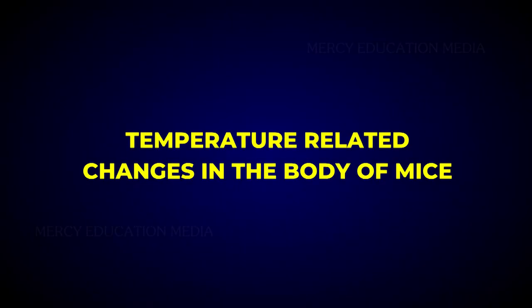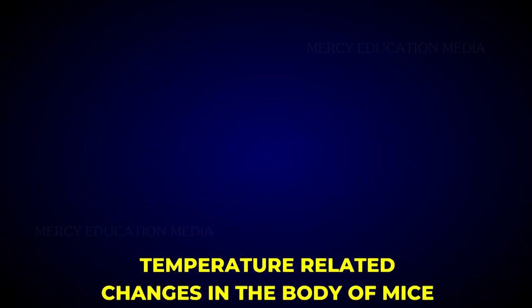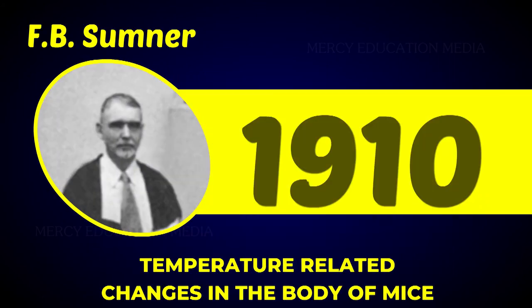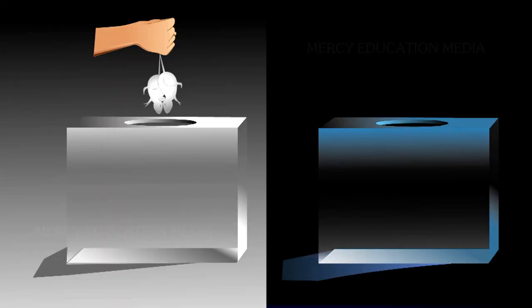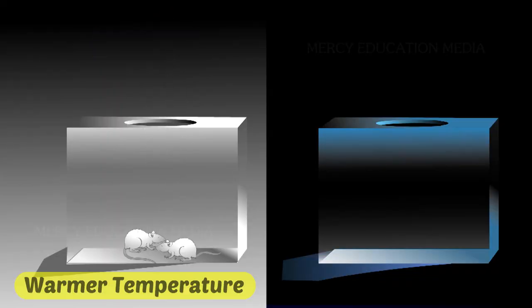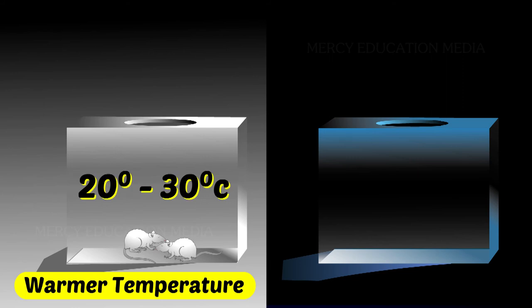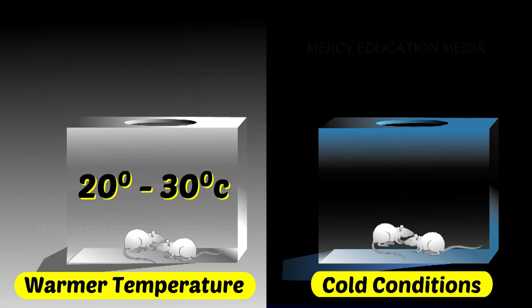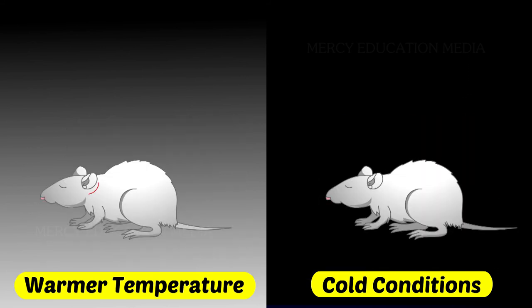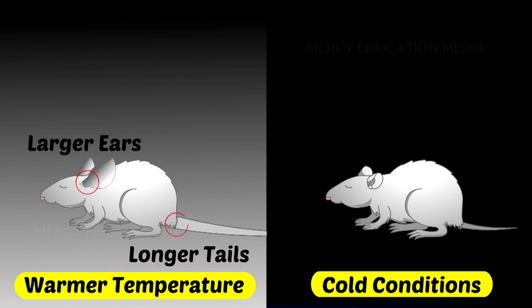Temperature-related changes in the body of mice was noted by F.B. Sumner in 1910. He reared one set of white mice in warmer temperature, that is between 20 to 30 degrees Celsius, and another set in cold conditions. He found that, in warmer conditions, the mice developed larger ears and longer tails. He further claimed that these characters were inherited.